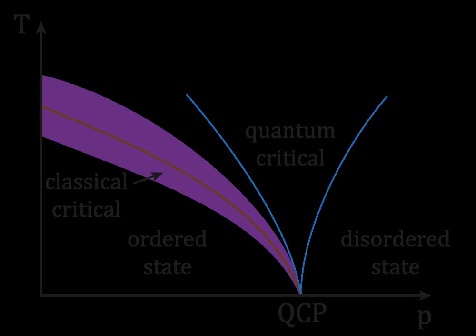The quantum confinement effect can be observed once the diameter of the particle is of the same magnitude as the wavelength of the electron's wave function. When materials are this small, their electronic and optical properties deviate substantially from those of bulk materials.